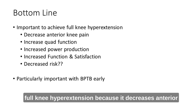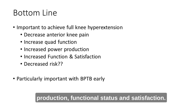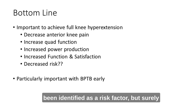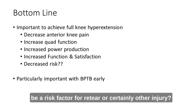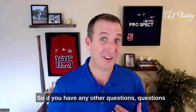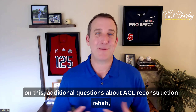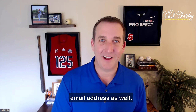Bottom line: it's important to achieve full knee hyperextension because it decreases anterior knee pain, increases quad function, and therefore increases power production, functional status, and satisfaction. Lacking knee flexion range of motion has been identified as a risk factor, and if you have anterior knee pain and quad function deficit, that logically would also be a risk factor for retear or other injury. This is particularly important with bone patellar tendon bone grafts. If you have additional questions about ACL reconstruction rehab, feel free to reach out at philplisky.com or by email.